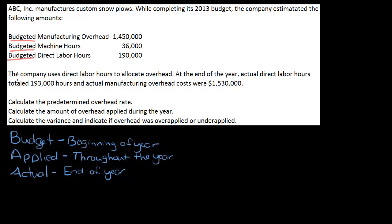The next sentence says the company uses direct labor hours to allocate manufacturing overhead, so we're going to use direct labor hours. At the end of the year, actual direct labor hours totaled $193,000, and actual manufacturing overhead was $1,530,000.